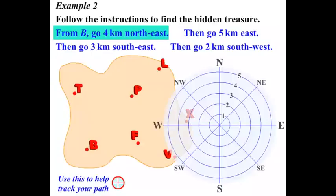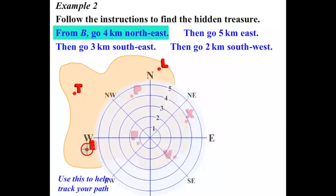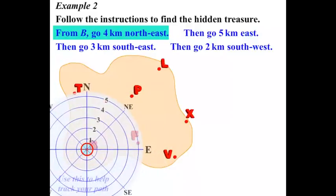From B, we're going to go 4km North East. So let's move our tracker right on B. Move our compass onto that point B. And we're going to move the tracker 4km North East. There we have it. So let's give that step a tick.